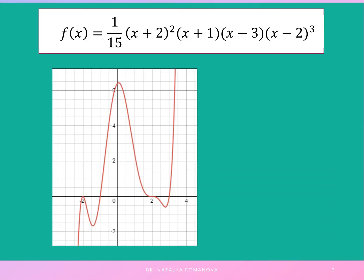Looking at this function from the previous slide, we can see our graph touches the x-axis at x equals negative 2, crosses at x equals negative 1, crosses at x equals 2, and crosses at x equals 3. Negative 2 just touches because zero equals negative 2 has even multiplicity of 2. Negative 1 has multiplicity 1 (odd), 2 has multiplicity 3 (odd), and 3 has multiplicity 1 (odd), so the graph crosses the x-axis at those points.